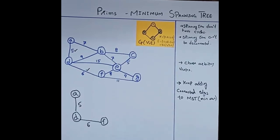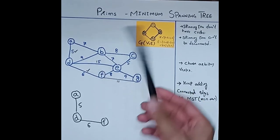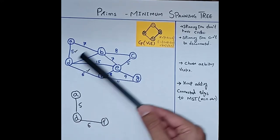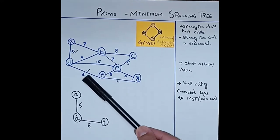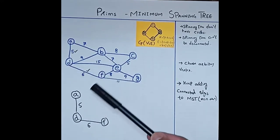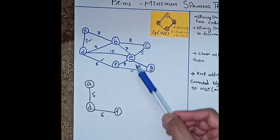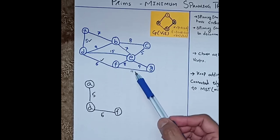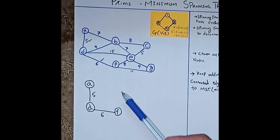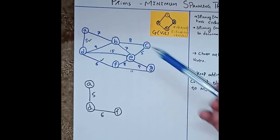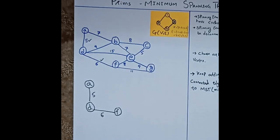Now we consider these three vertices. A to D — weight 5 is already selected. A to B is 7. D's remaining paths are 9 and 15. F is connected to E with weight 8 and to G with weight 11. Out of 11, 8, 7, 9, and 15, the minimum is 7. So we choose the path A to B with weight 7.